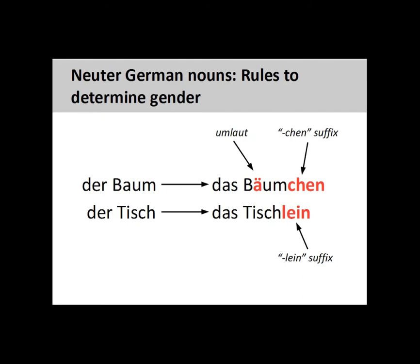For example, Baum, meaning tree, becomes Bäumchen, little tree, and Tisch, meaning table, becomes Tischlein, little table. There are also numerous dialect variations of the diminutive suffix.